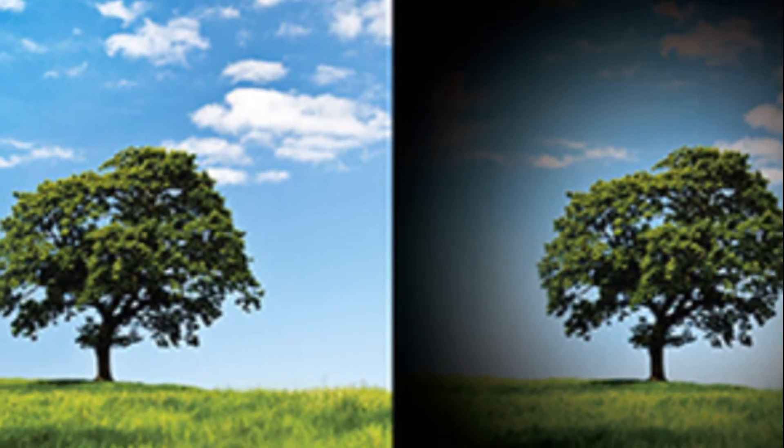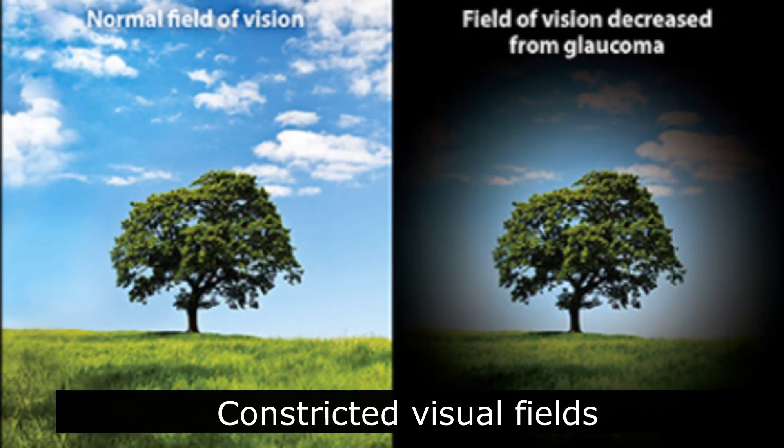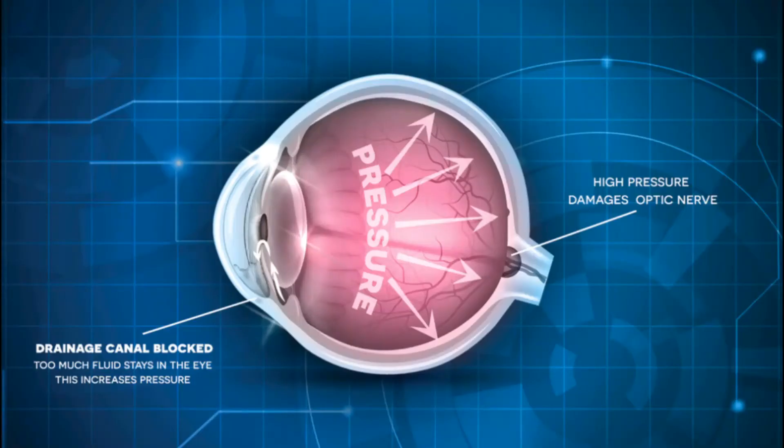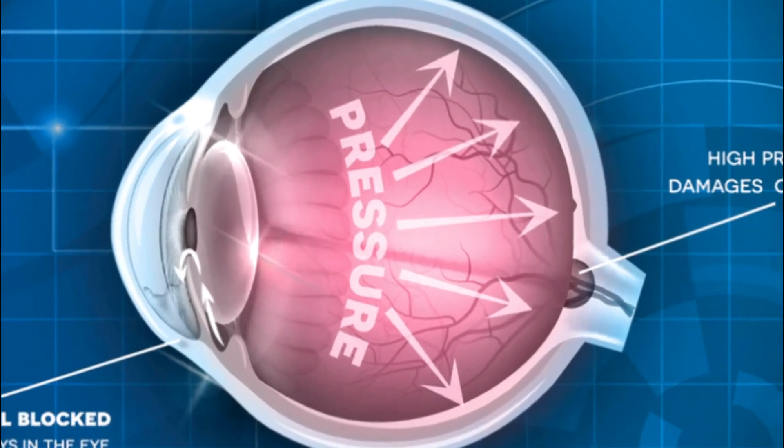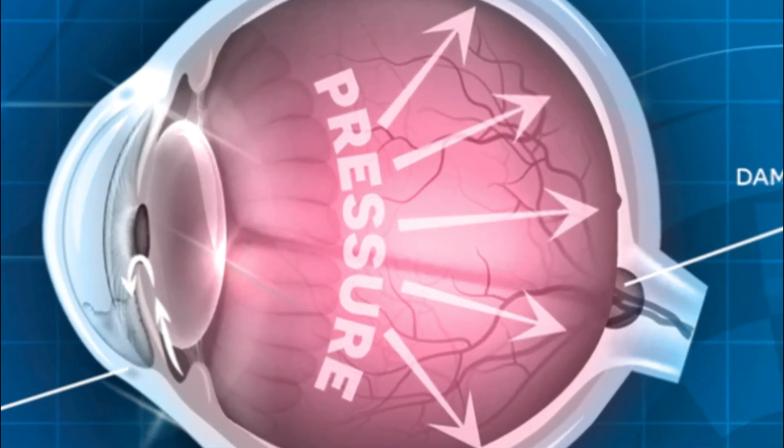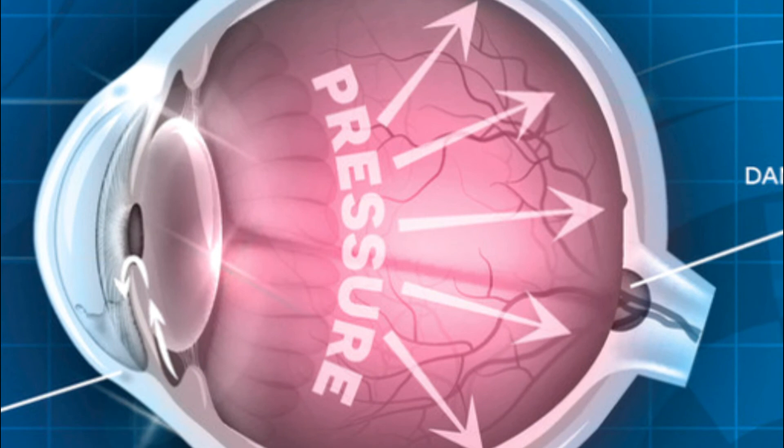At this point, we say that the visual fields are constricted or narrowed. In brief, these are the three components of glaucoma: high eye pressures, optic nerve damage, and constricted visual fields.